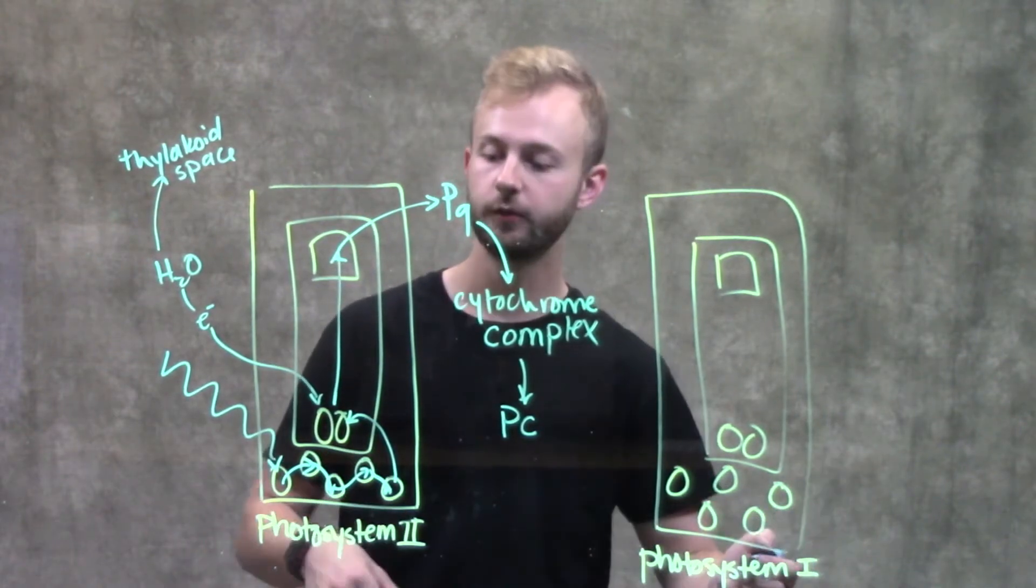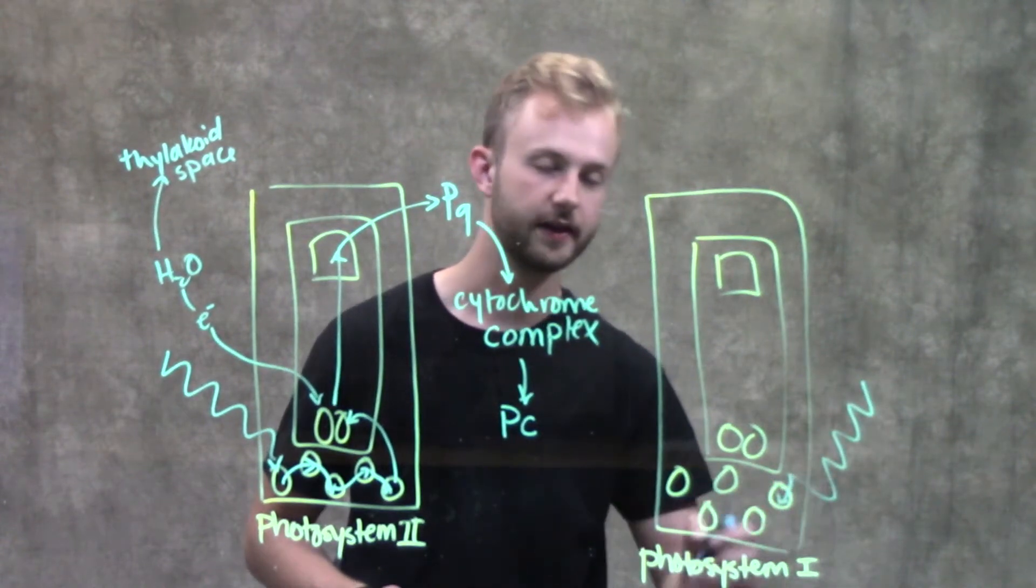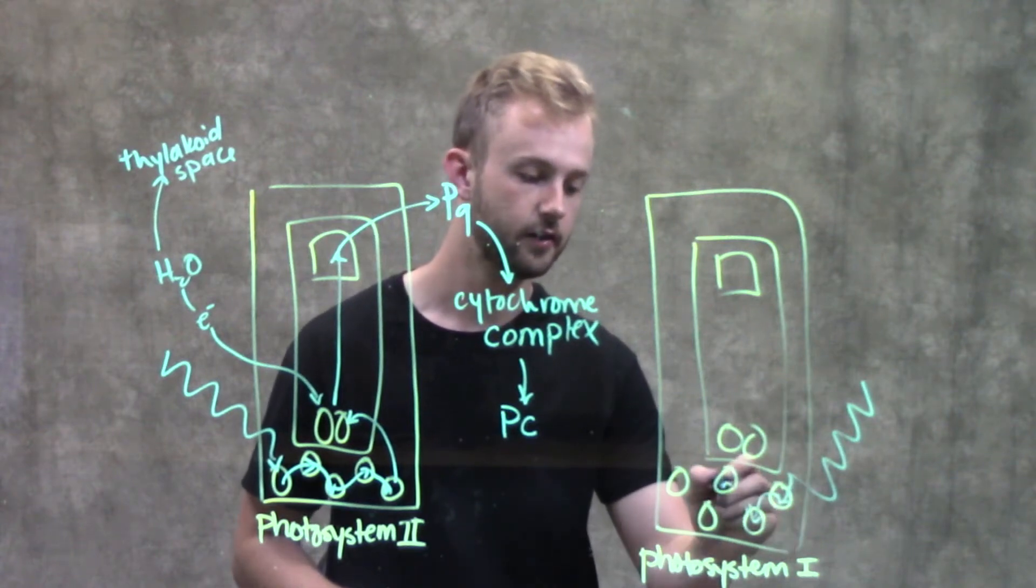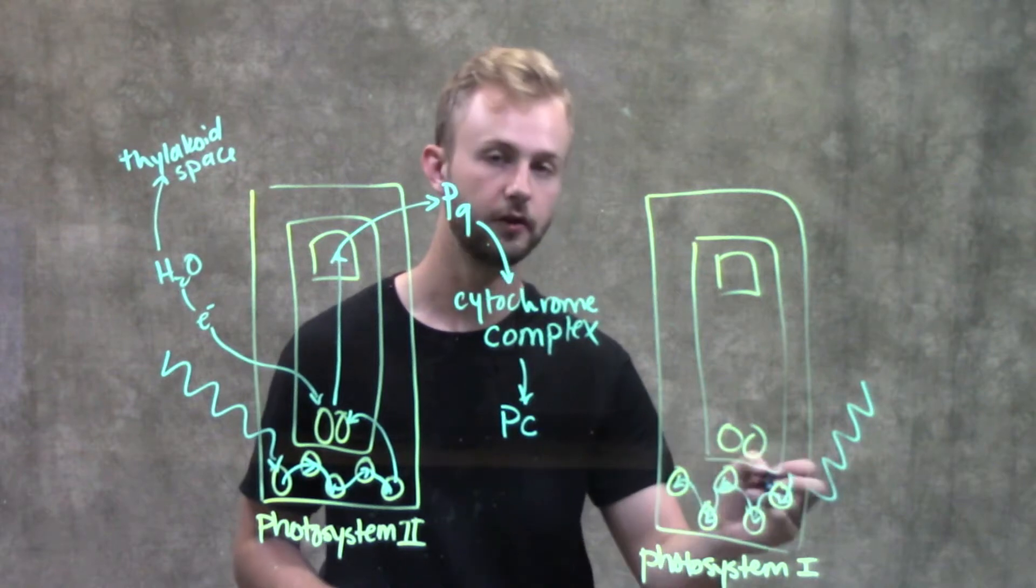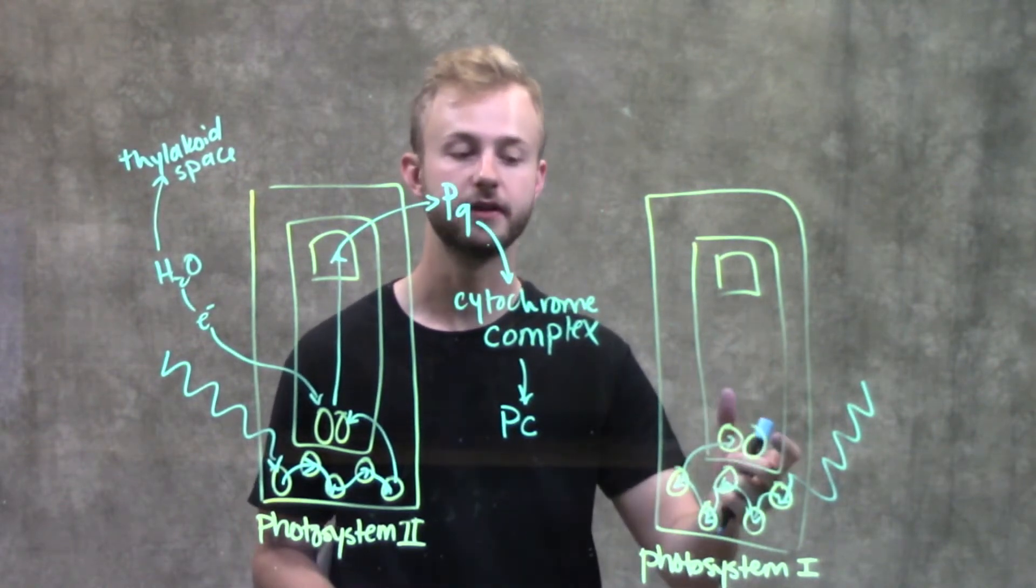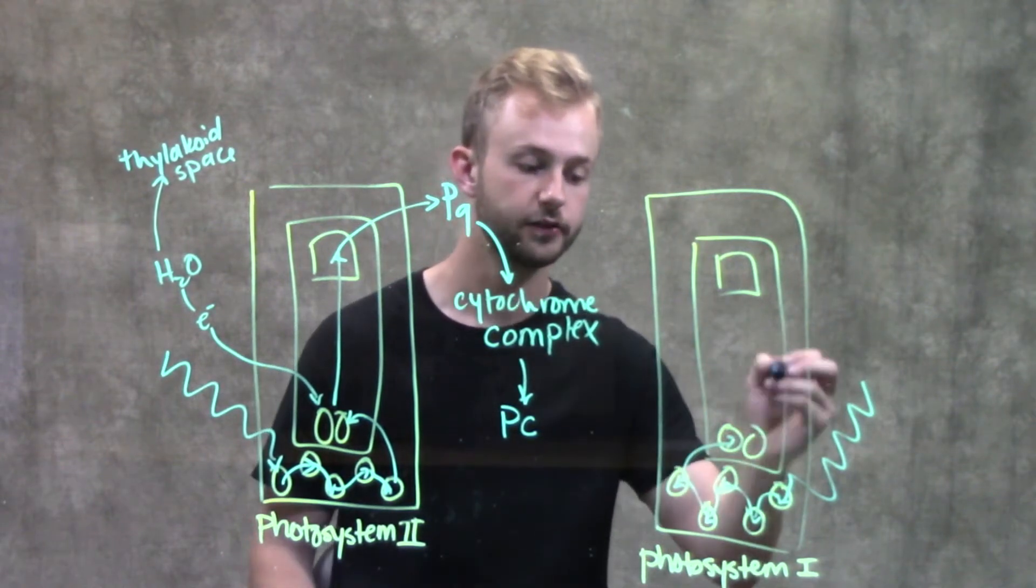In photosystem I, we have a very similar process. A photon of light hits one of the chlorophyll molecules and excites its electrons. That excitement gets passed to the other chlorophyll molecules before going to the P700 chlorophyll molecules in the reaction center complex.